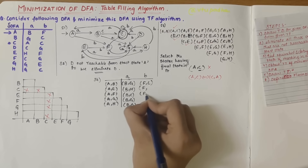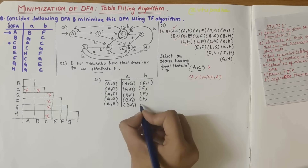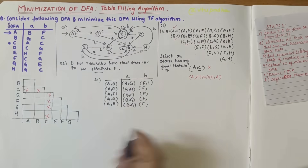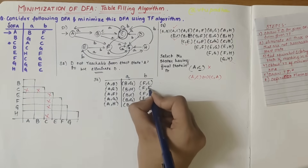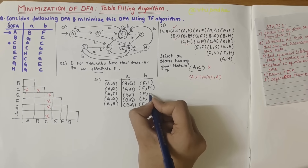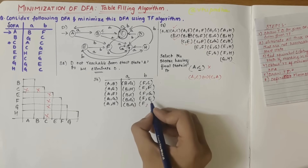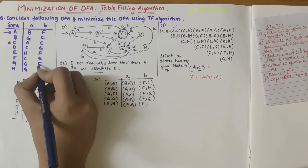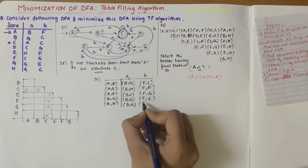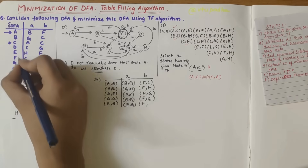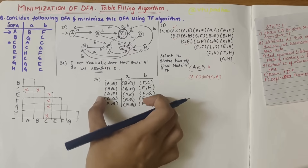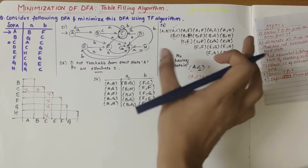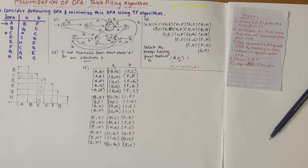For input b, a is always mapped to f, but the paired state varies: e on b gives f, f on b gives g, g on b gives e, and h on b gives c. We write down this kind of table for all states which are not yet marked, listing the resulting state pairs for each input.